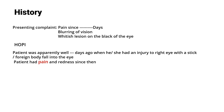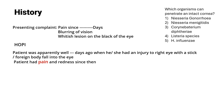The history of presenting illness: the patient was apparently well a few days ago when they had an injury to the right or left eye with a stick or foreign body. Remember, corneal ulcer cannot just happen inherently — there has to be some preceding trauma followed by an infection. Examiners may ask what organisms can penetrate an intact corneal epithelium without injury.